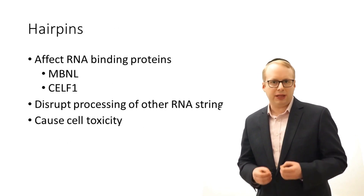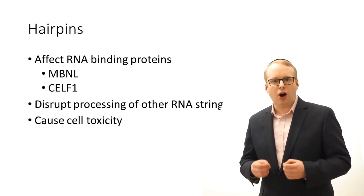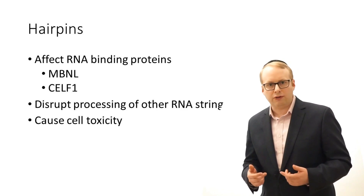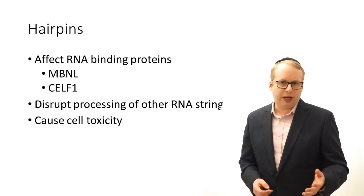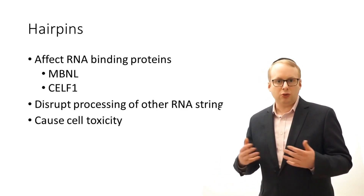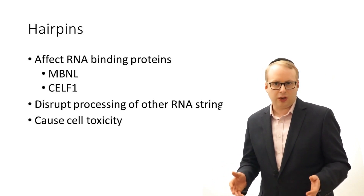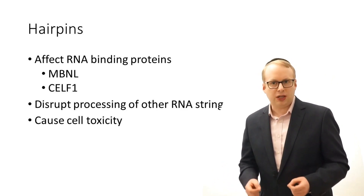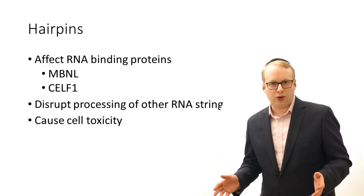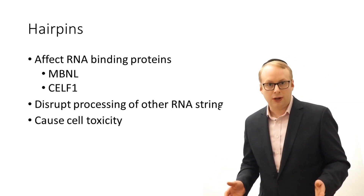These hairpins are now believed to affect a number of RNA binding proteins within the nucleus itself, such as MBNL and CELF1, which also cause more general disruption and toxicity to cells by disrupting the splicing of many other RNA strings, and could explain why these are multisystem disorders.